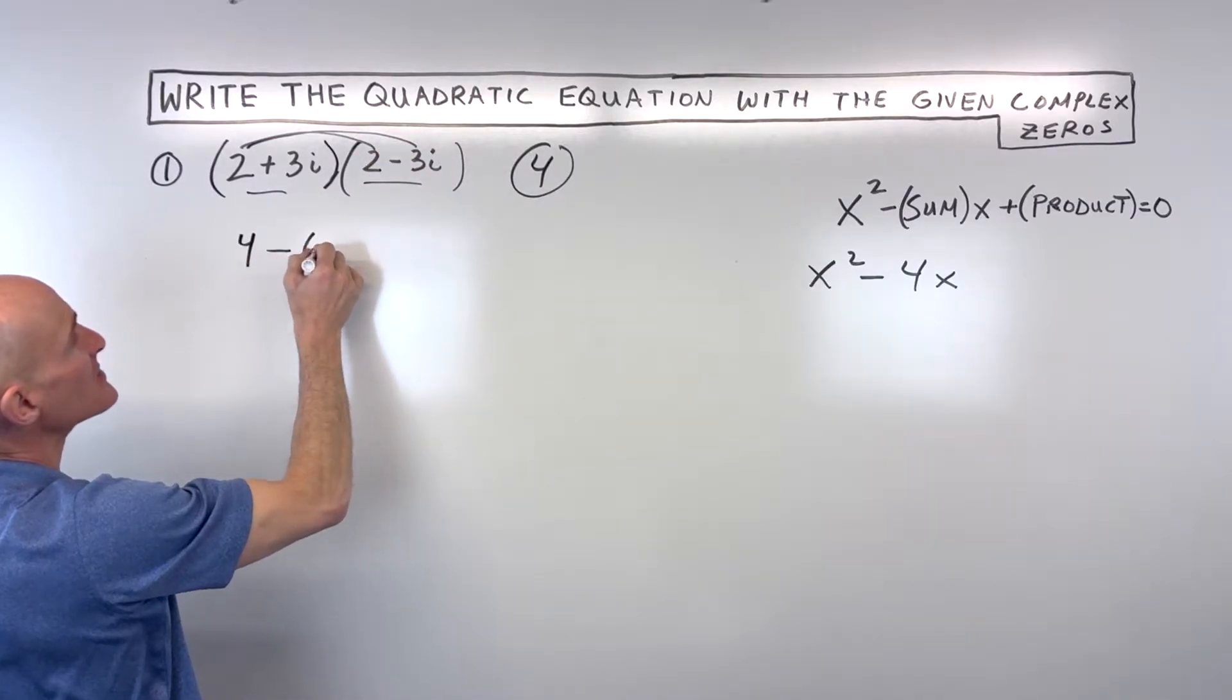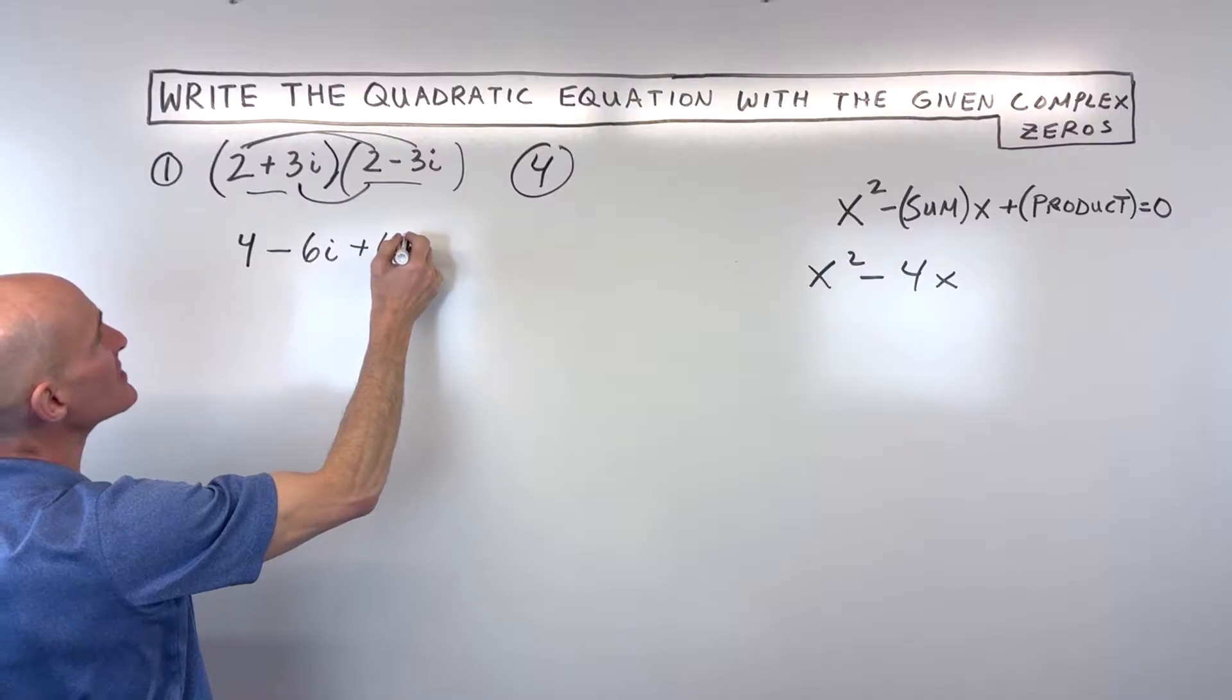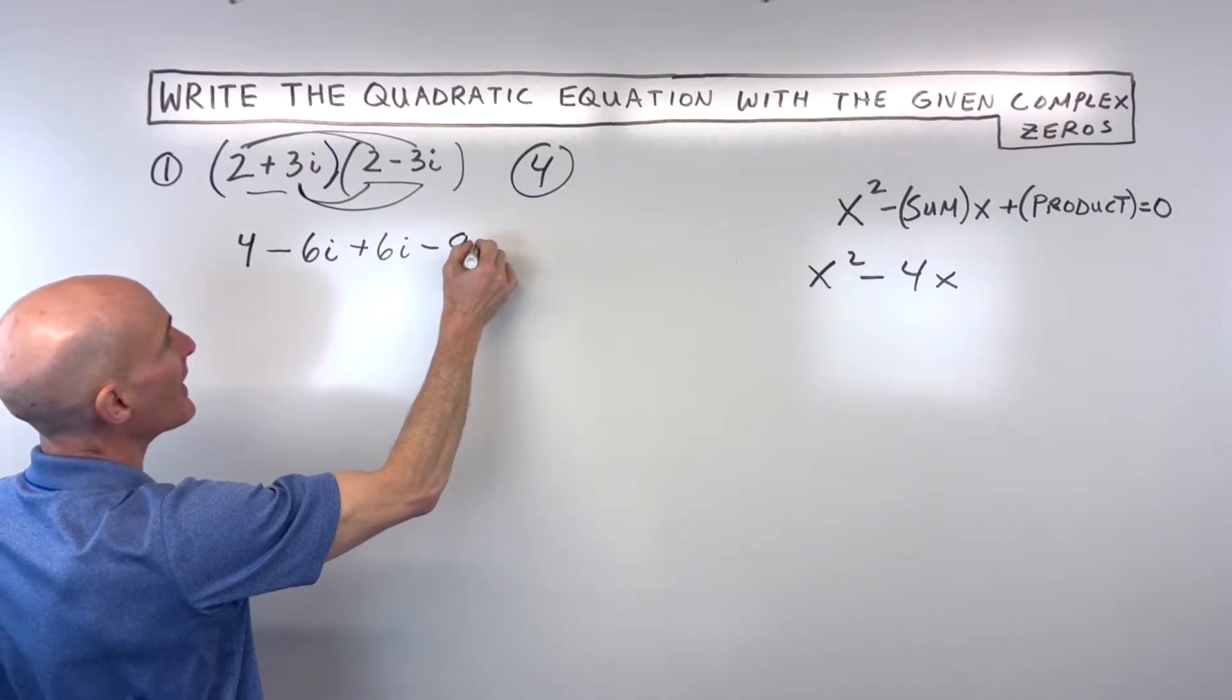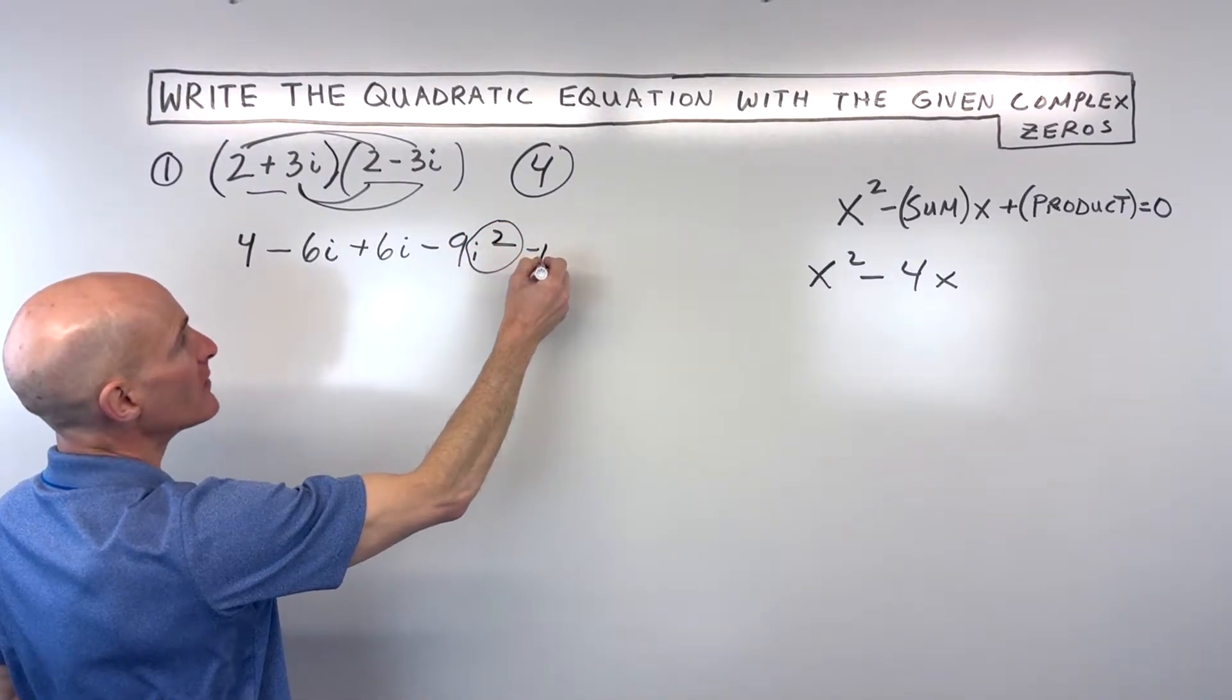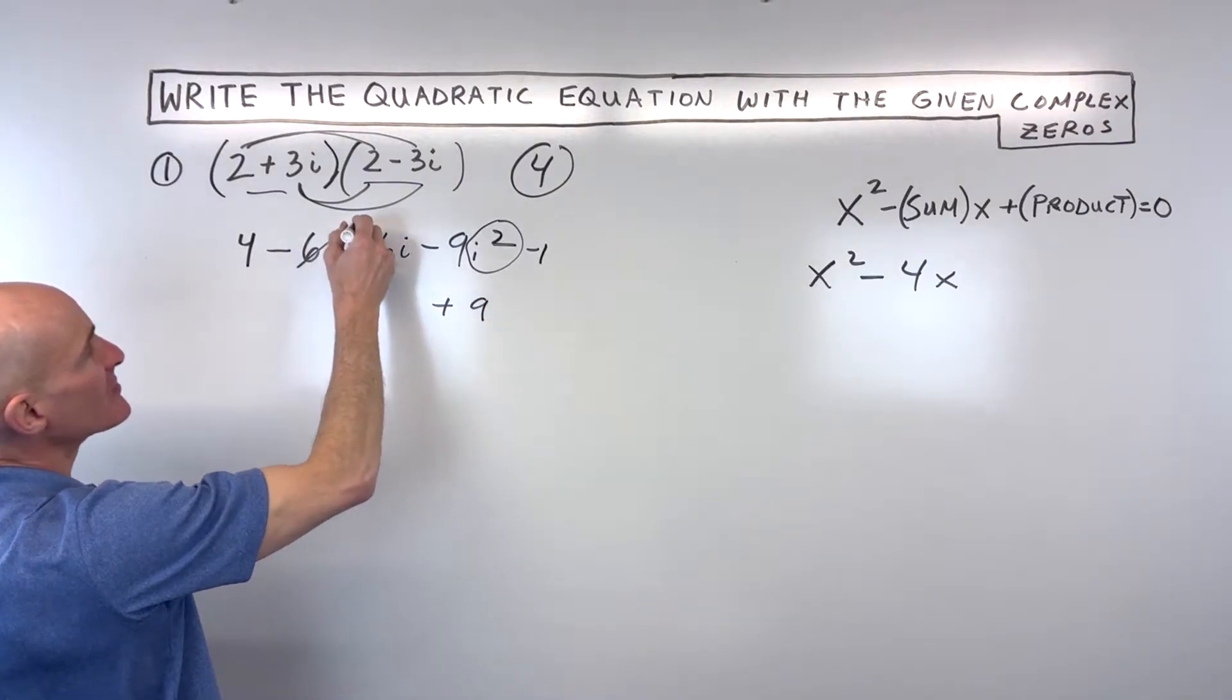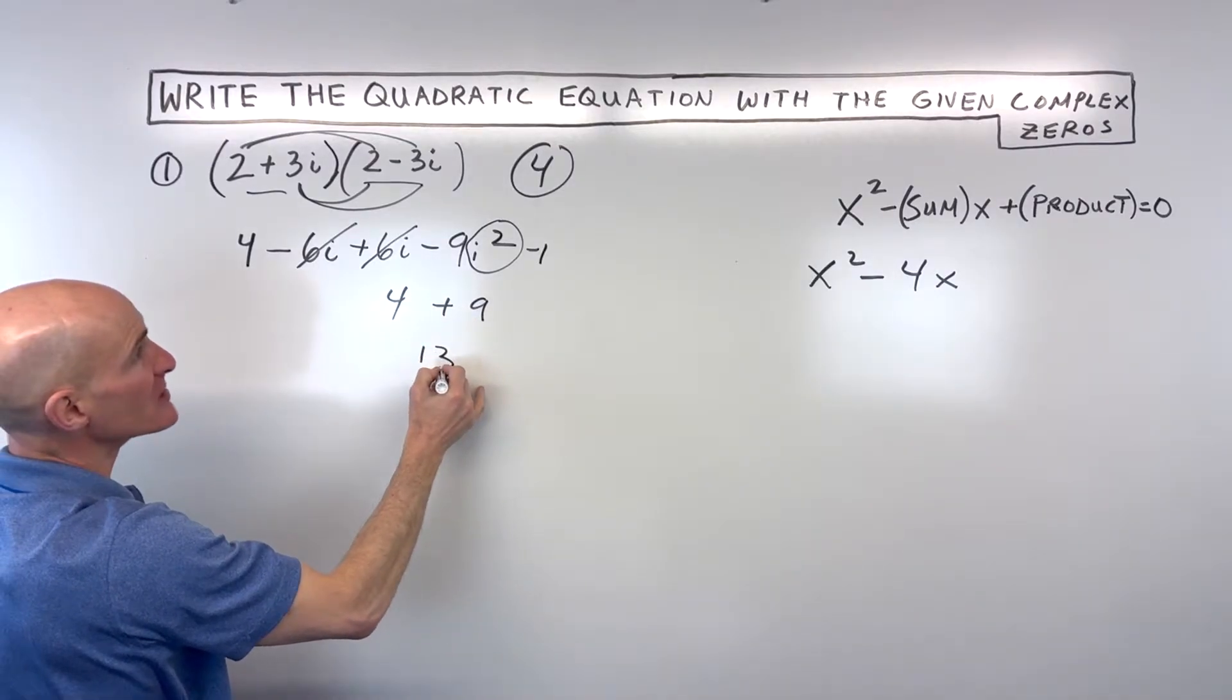2 times negative 3i is negative 6i. 3i times 2 is positive 6i. And 3i times negative 3i is negative 9i squared. We know that i squared is negative 1 times negative 9 gives us positive 9. The negative 6i and positive 6i cancel.